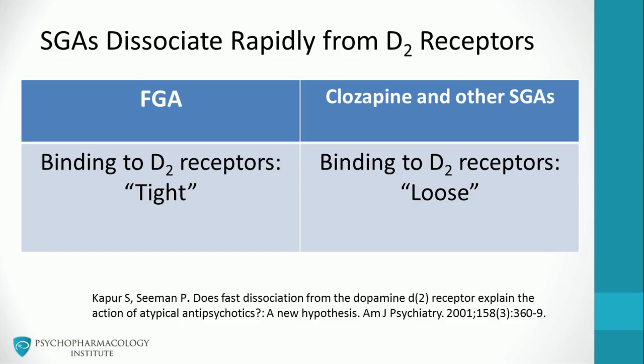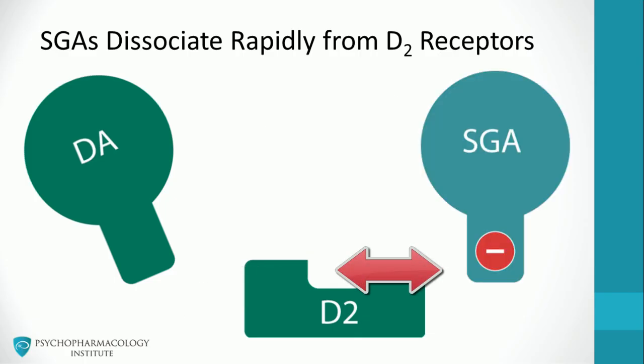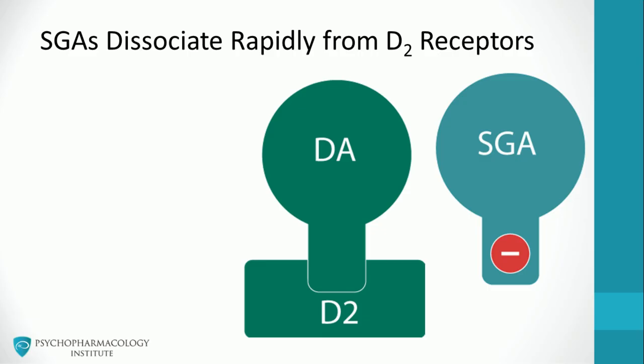Fast dissociation from D2 receptors would be a possible explanation for the lower risk of extrapyramidal symptoms with drugs such as clozapine. This table compares first and second generation antipsychotics in terms of their binding to D2 receptors. Conventional antipsychotics tend to bind more tightly to dopamine receptors than dopamine itself, while clozapine and other second generation agents bind more loosely. In the presence of dopamine, second generation agents tend to come off the receptor more easily — this is depicted in the sequence showing fast dissociation from D2 receptors, ultimately allowing dopamine to bind.